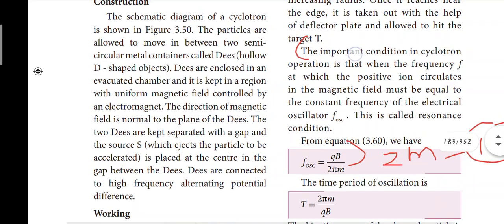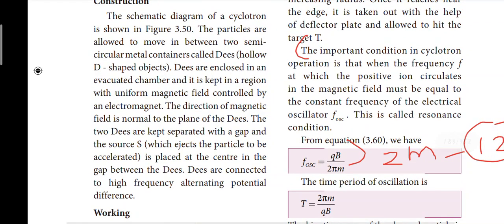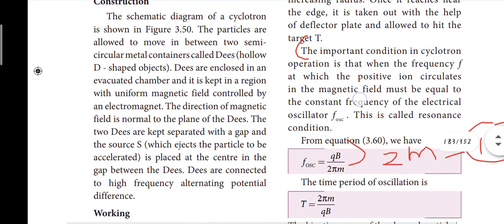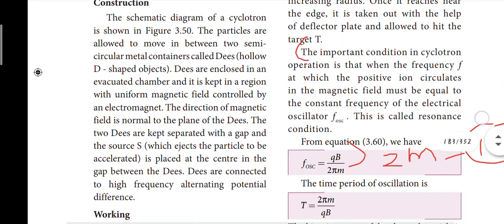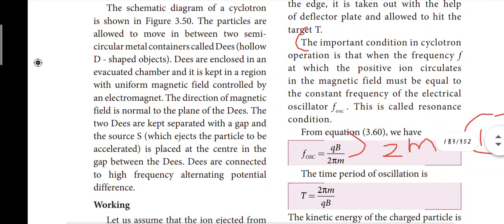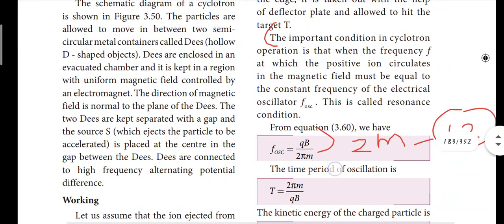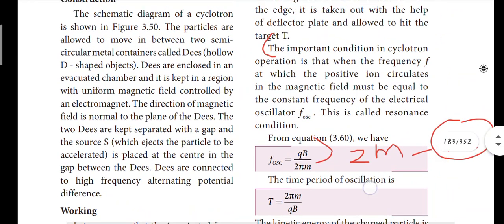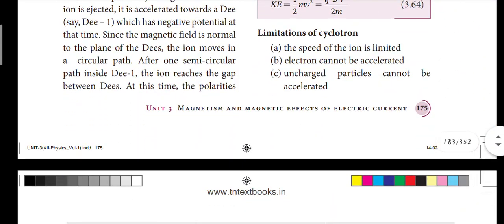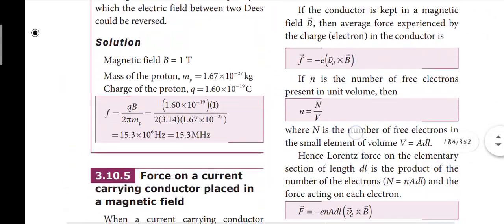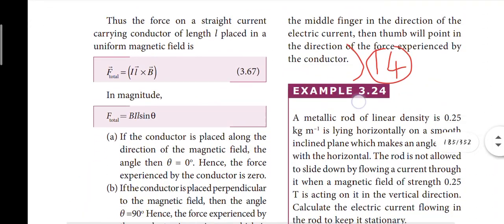For cyclotron, the important condition is that the frequency is equal to the magnetic field — the resonance condition. The magnetic field must be constant and equal to the frequency of oscillation. The equation and page number 175 should be covered — this is the twelfth question.